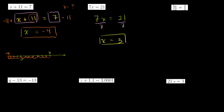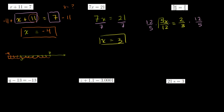This next one looks a little more difficult but it's not too bad: 5x over 12 is equal to 2 thirds. How do we isolate the x? What if we multiply both sides of this equation by 12 over 5? I picked 12 over 5 because it cancels perfectly with the 5 over 12 — the 12's cancel out, the 5's cancel out, and you're left with just x. So x is equal to 2 thirds times 12 over 5.